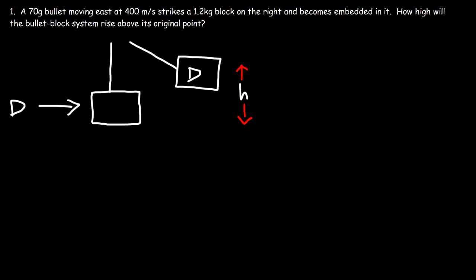In this video we're going to work on this ballistic pendulum problem. We have a 70 gram bullet moving east at 400 meters per second and it strikes a 1.2 kilogram block on the right and becomes embedded in it. How high will the bullet-block system rise above its original point? The mass of the bullet is 70 grams moving at 400 meters per second.